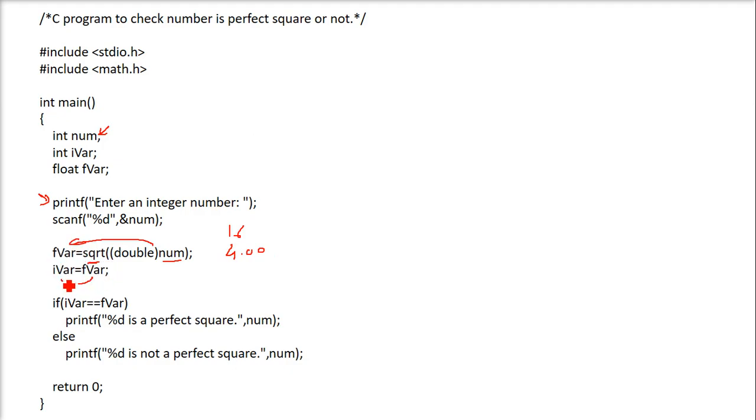Now we will assign this f variable to i variable. This is an integer, this is a float. So i variable will now contain 4.